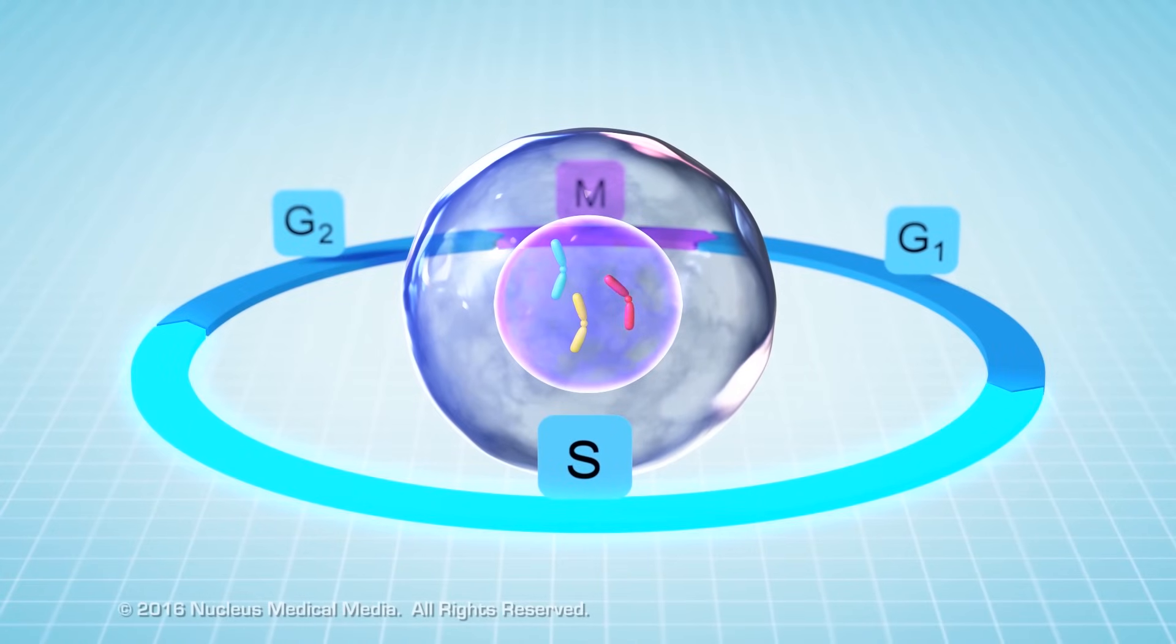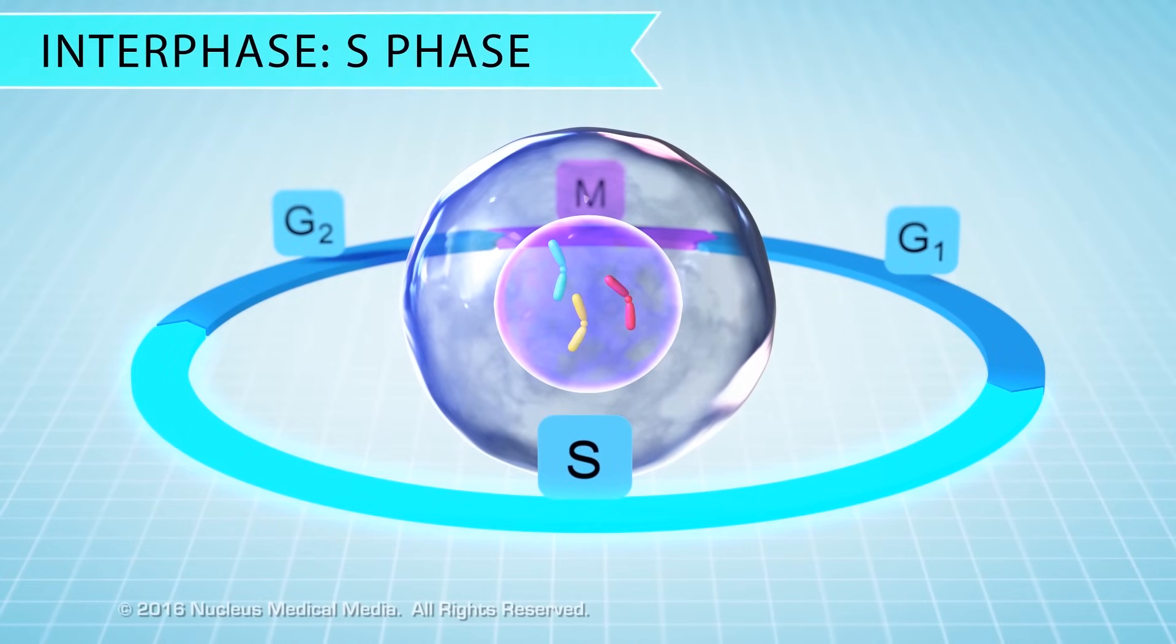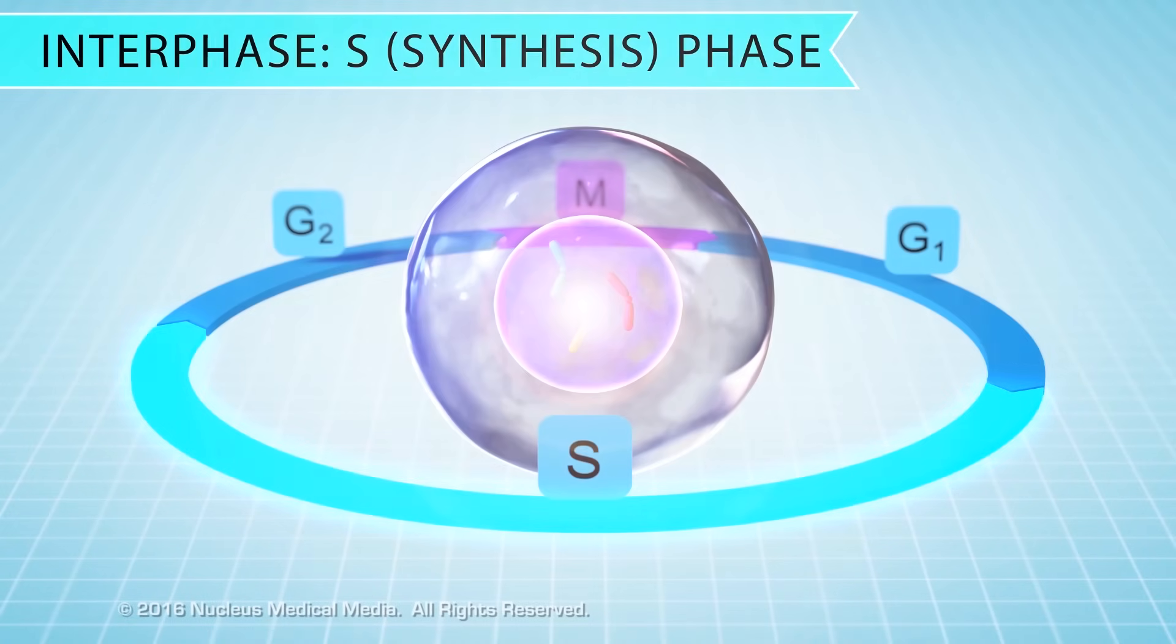A cell enters the S phase after it grows to the point where it's no longer able to function well and needs to divide. The S stands for synthesis, which means to make, because a copy of DNA is being made during this phase.